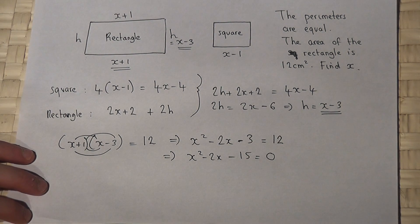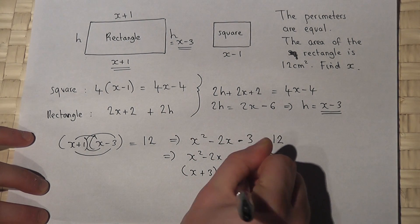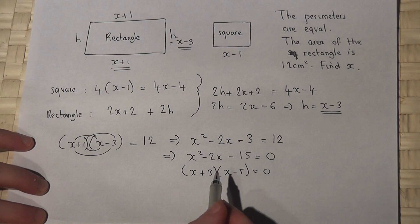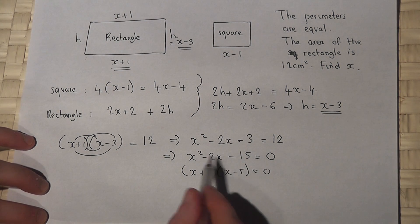I'll then try to factorise it. Well if I put x plus 3 and x minus 5 equals 0, 3 times minus 5 is minus 15, and 3 take away 5 is minus 2. So therefore the solutions are x equals minus 3 or x equals plus 5.